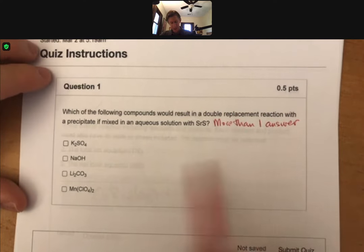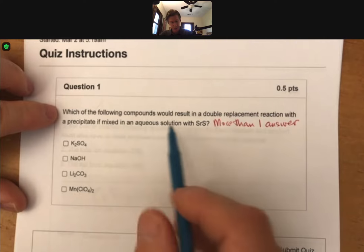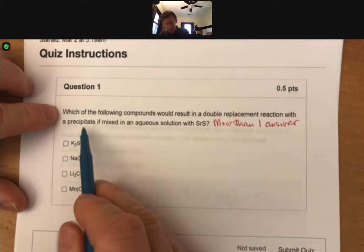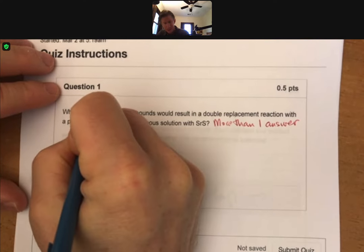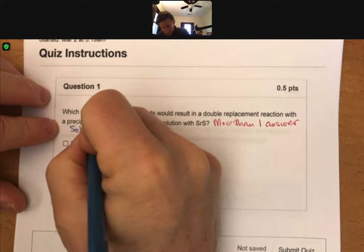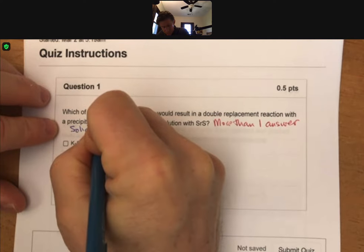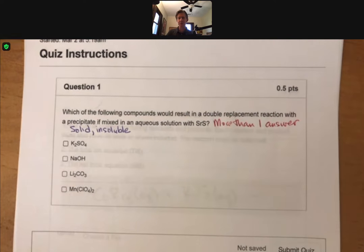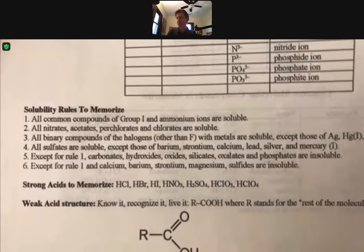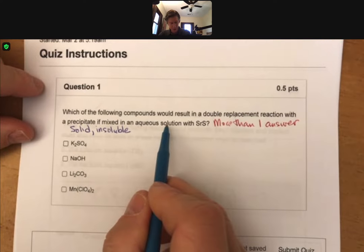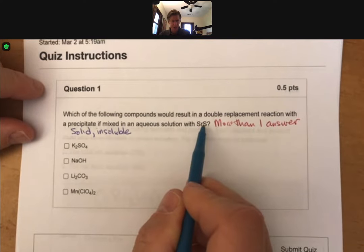And now let's read the question. It says, which of the following compounds would result in a double replacement reaction with a precipitate, and remember precipitate means solid, and solid to us means insoluble, and it means we're going to have to reference our solubility rules, and I just so happen to have them handy. If mixed with an aqueous solution with strontium sulfide.